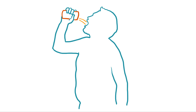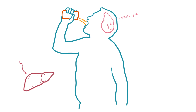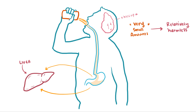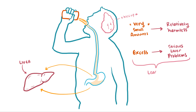So when you drink alcohol, what happens to the alcohol? Well, that's mainly your liver's job. Once the alcohol gets to your stomach, most of it is sent to your liver for processing. In very small amounts, alcohol is more or less harmless, but in excess it can lead to serious liver complications, and is the leading cause of liver disease in western nations.